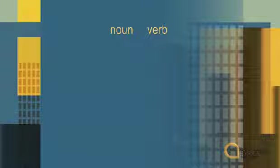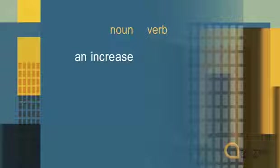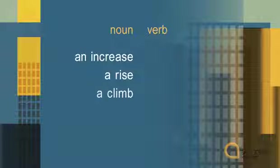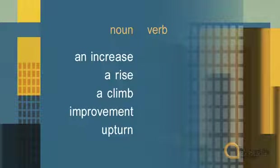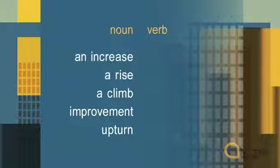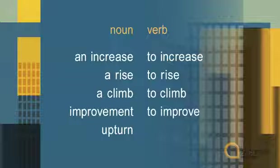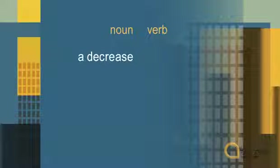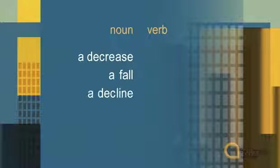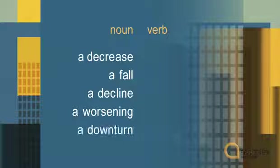In describing trends, we use two words — one is a noun or verb. For example, we may talk about an increase or a decrease in numbers. Other words for an increase are rise, climb, improvement, upturn. Most of these words can also be used as a verb: to increase, to rise, to climb, to improve. Other words for a decrease are fall, decline, worsening, downturn.